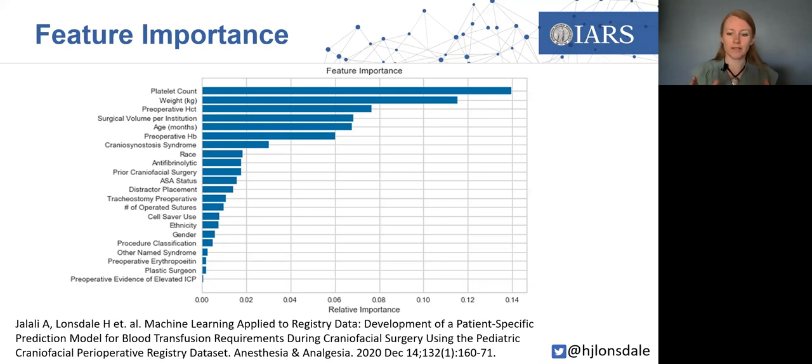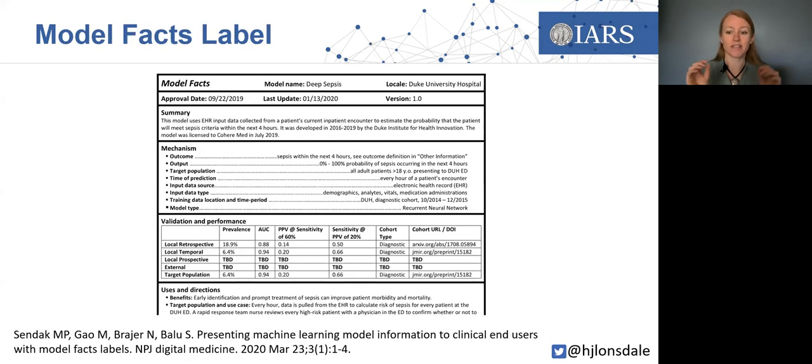An important point about the clinical use of machine learning algorithms is to ensure we're using them for the population they were designed for. Just like I know that it's not practical to use my car to drive from here to my kitchen, or from here in the USA back to visit my family in the UK, one proposed strategy for this is the model facts label. Just like a drug carries indications, contraindications and precautions, we could summarize the usage information for machine learning in a similar fashion, as suggested by Sendak and colleagues. Perhaps it's a novelty idea, but it stresses the need to use models within the bounds of their design.